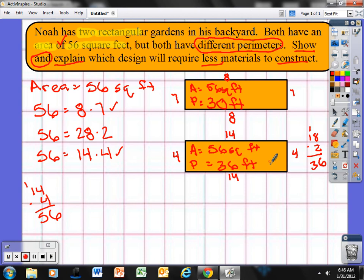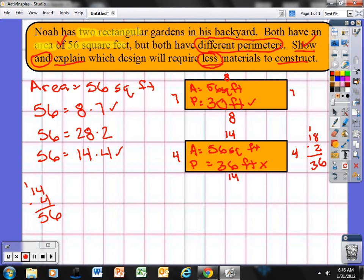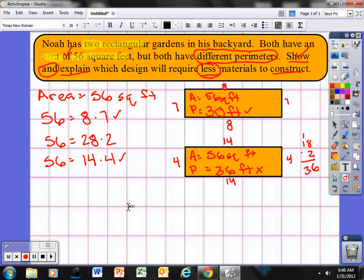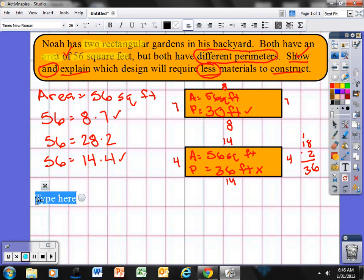OK, I wanted to find which requires less material. 30 is less than 36, so I've shown my work, that's a check. Now you need to explain it. I'm going to type it because I tend to type a little bit neater on this than I write. So again I need to think about what the question's asking. Noah has two rectangular gardens in his backyard, both have an area of 56 square feet, but both have different perimeters. Show and explain which design require less material. So first thing I did...